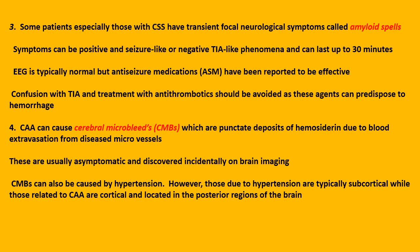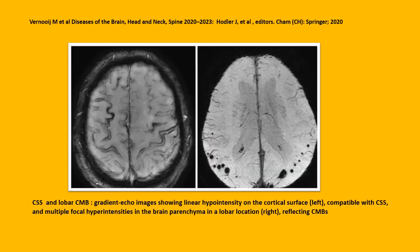Number four: CAA can cause cerebral microbleeds, or CMBs, which are punctate deposits of hemosiderin due to blood extravasation from diseased micro vessels. These are asymptomatic and discovered incidentally on brain imaging. CMBs can also be caused by hypertension; however, those due to hypertension are typically subcortical, while those related to CAA are cortical and most commonly located in the posterior regions. This figure shows CSS and lobar CMBs on brain imaging — gradient echo images showing linear hypointensity on the cortical surface compatible with CSS, and multiple focal hypointensities in the posterior brain parenchyma in a lobar location reflecting CMBs.